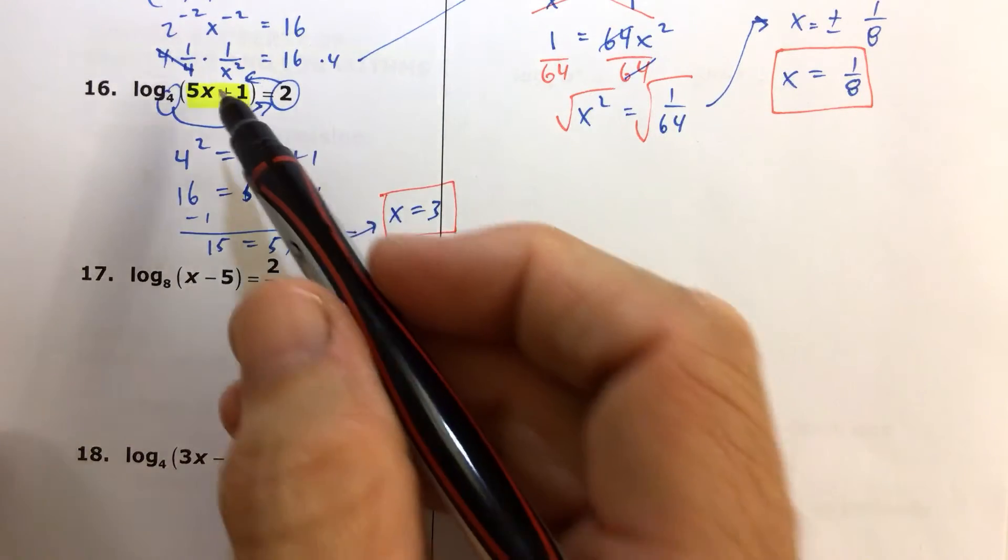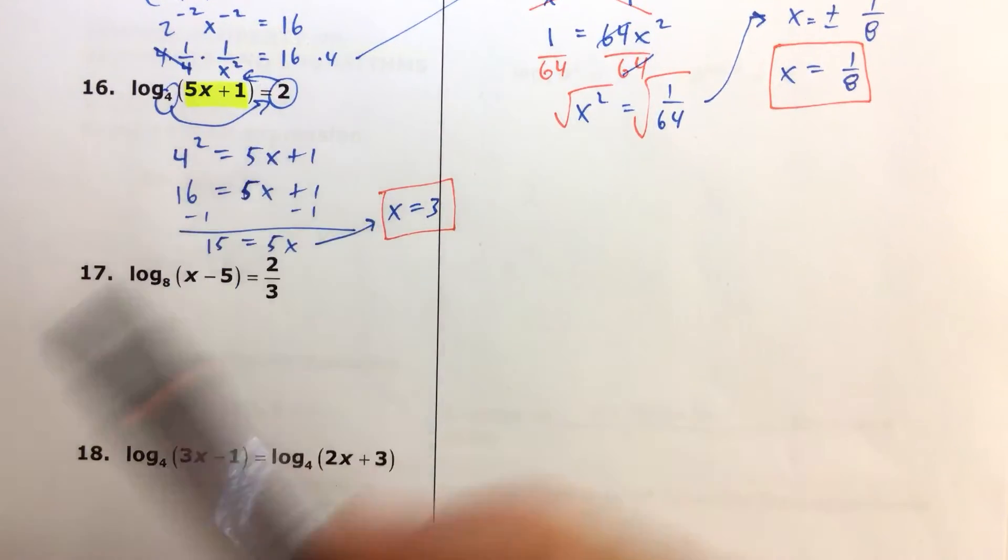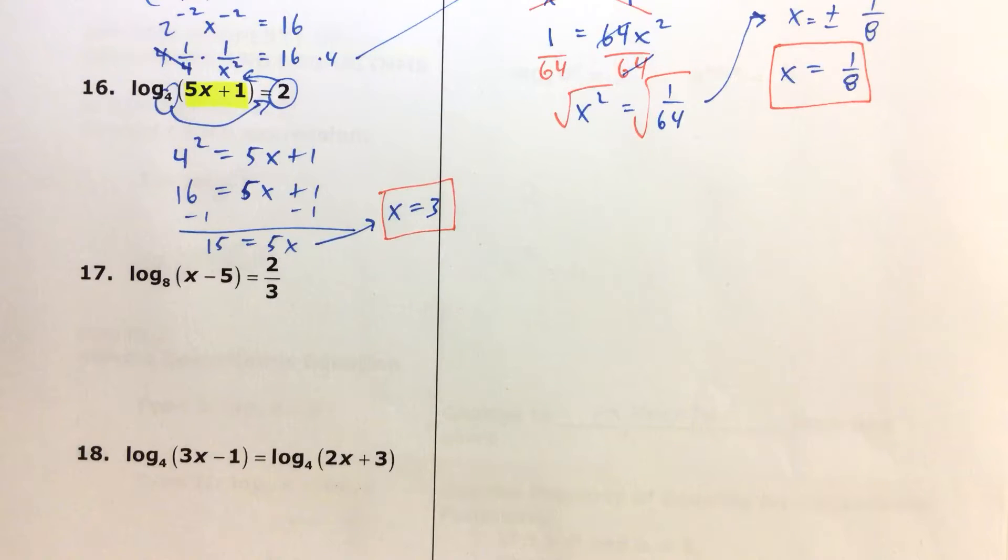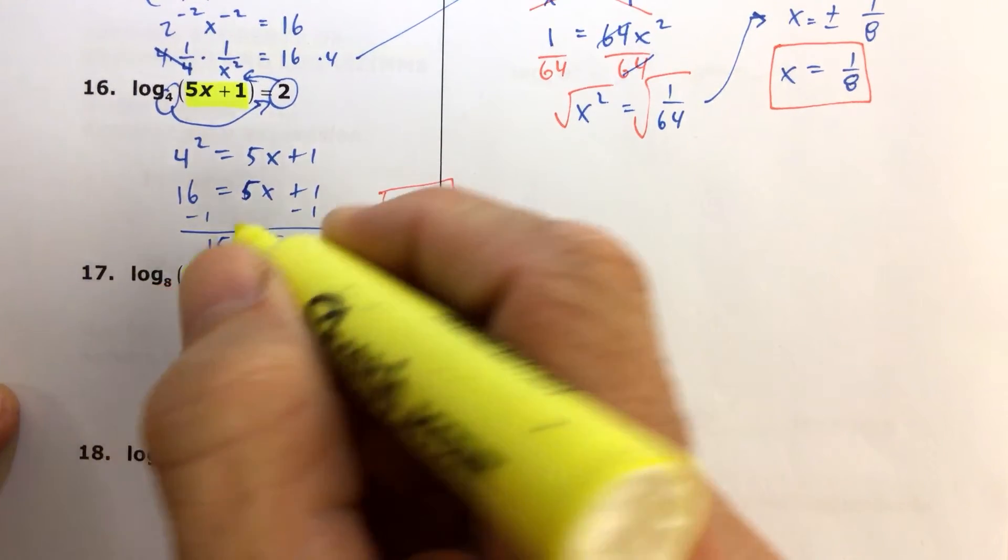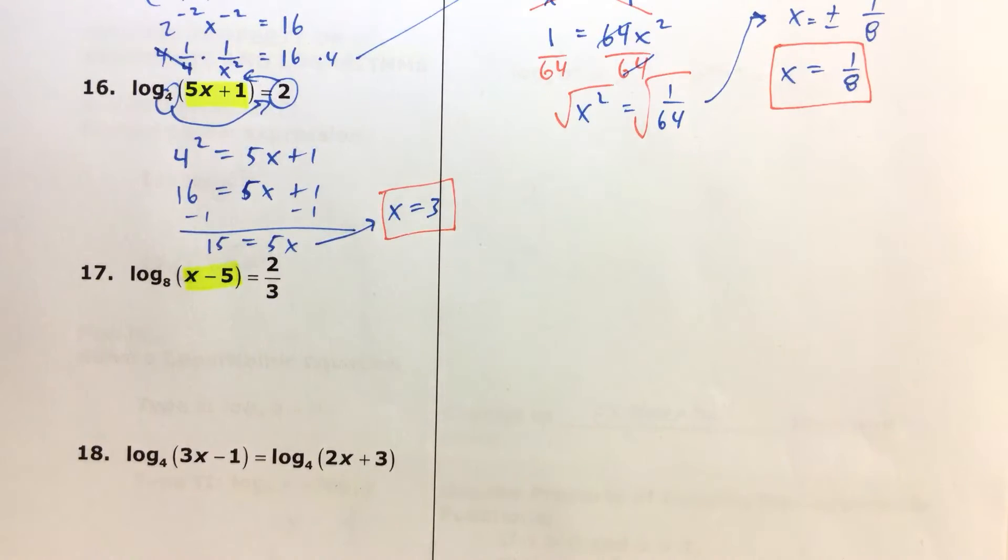Again, variable is locked up in the log. We convert to exponential form. So being able to convert to exponential form is a critical component to being successful in these kinds of problems.